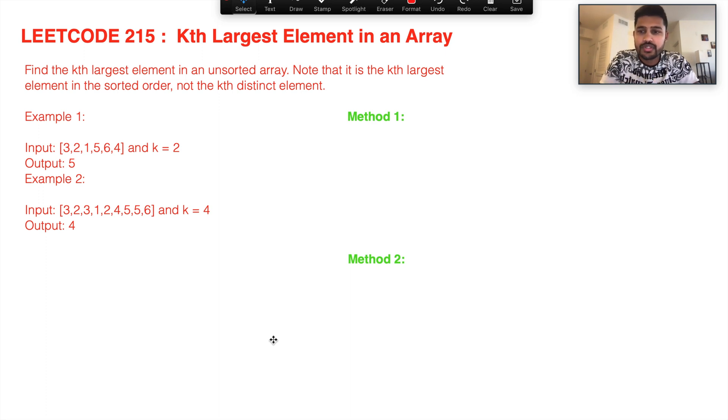Let's go to the problem description. Find the kth largest element in an unsorted array. Note that it is the kth largest element in the sorted order, not the kth distinct element.